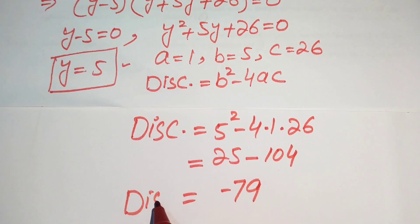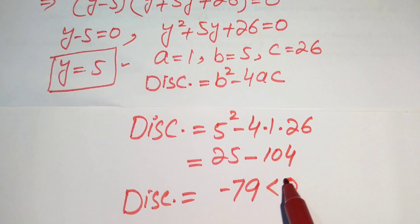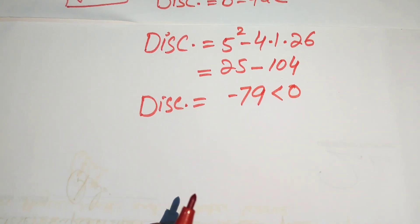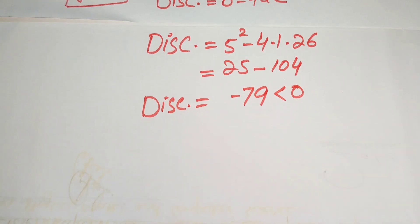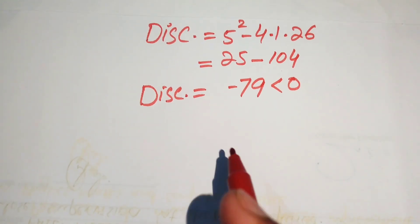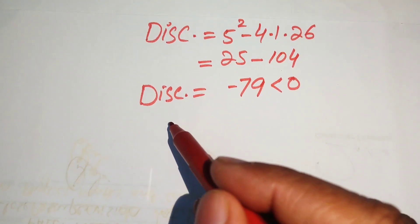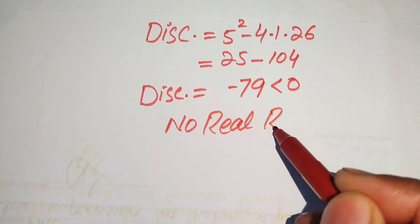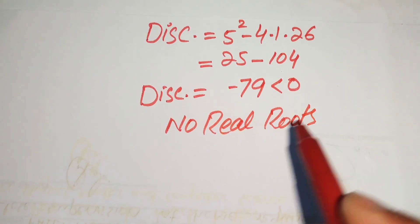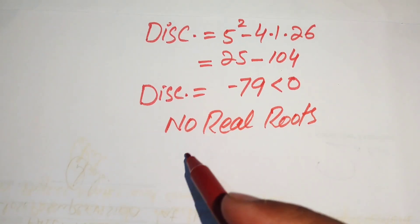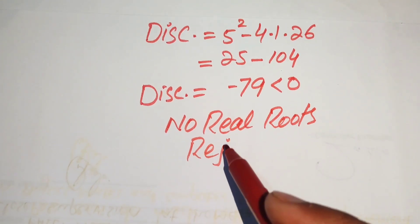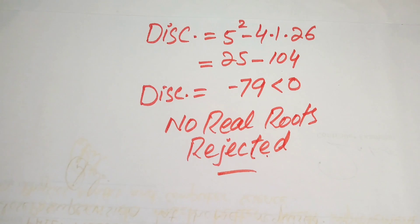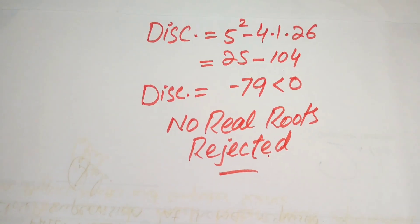The discriminant equals minus 79, which is less than zero. This means the quadratic has no real roots — only complex roots. Since we are solving for real values, we reject this case.